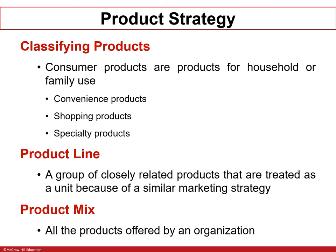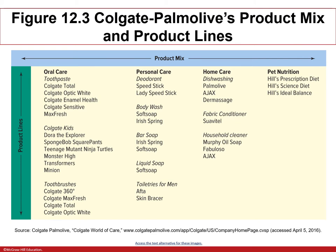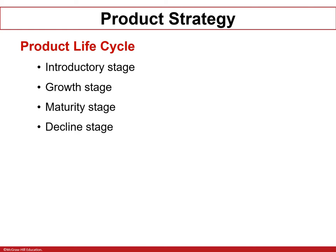There are two important keywords: product line and product mix. Product line is a group of closely related products, while product mix means all products offered by the organization. For example, Colgate-Palmolive consists of four product lines: oral care products including toothpaste, Colgate kits, and toothbrush; personal care products; home care products; and pet nutrition. All of them together make up the product mix for the company. You must be able to describe the difference between product line and product mix.